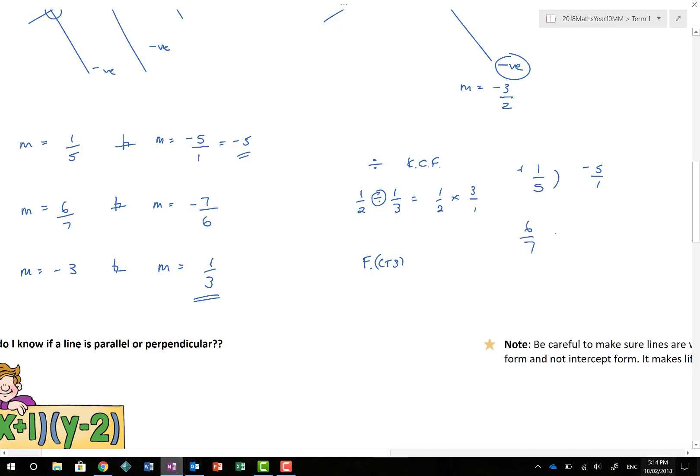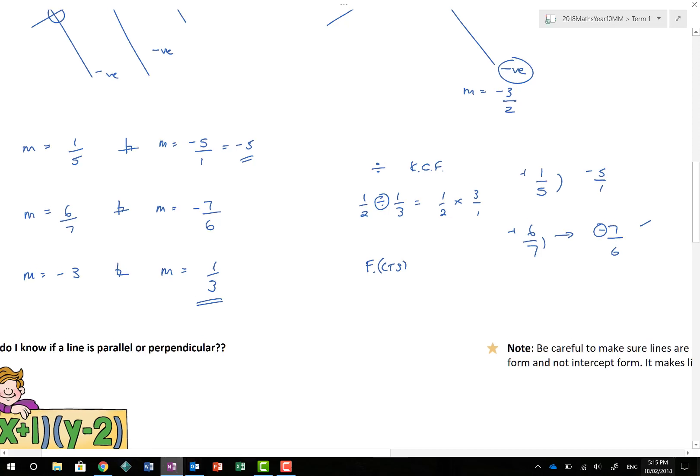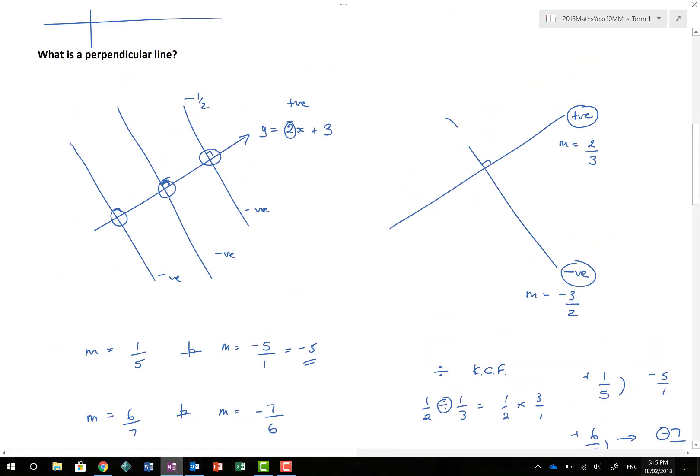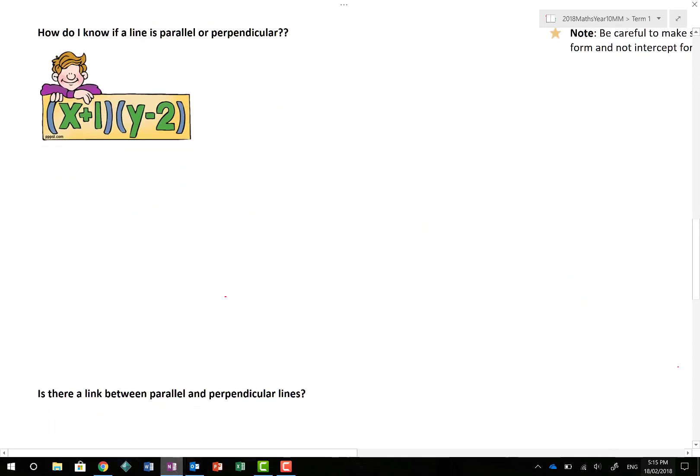6 over 7 became negative 7 over 6. Did we flip the fraction? Yes. The positive becomes negative. If we have one line with a positive gradient, then its perpendicular must be negative. How do we know if a line is parallel or perpendicular? Just by looking at them, literally just by looking at them.